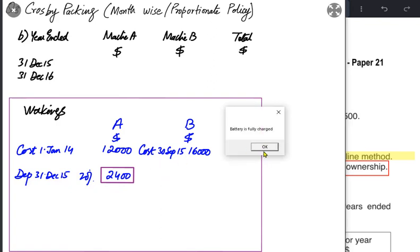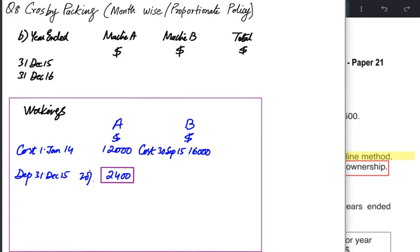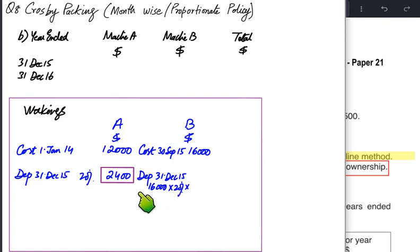Machine B was bought at the end of September, so we don't charge depreciation before that. We start from 1st October, counting October, November, and December — three months only. First, apply 20% on 16,000 to get 3,200 for the full year. Then pro-rata for three months: 3,200 × 3/12 = 800. So Machine B depreciation for 2015 is only 800.